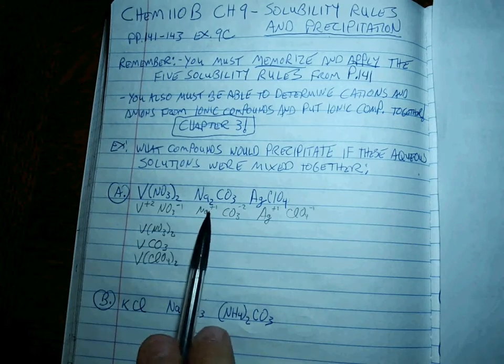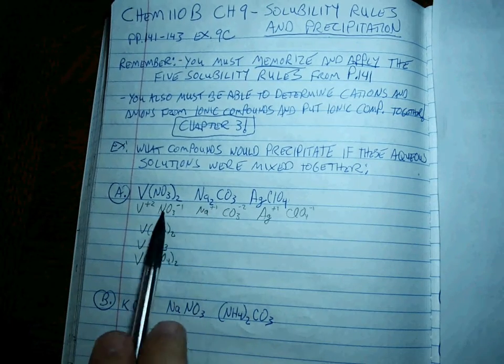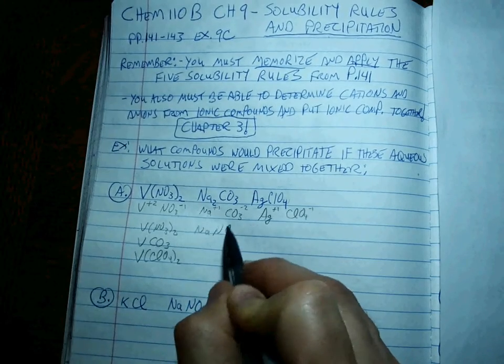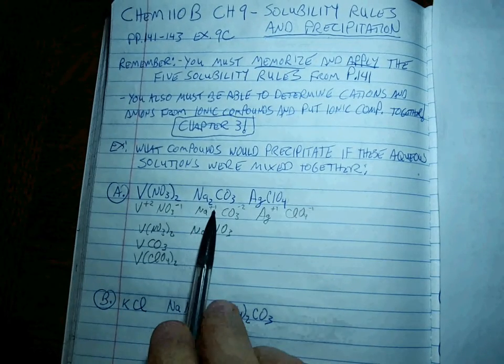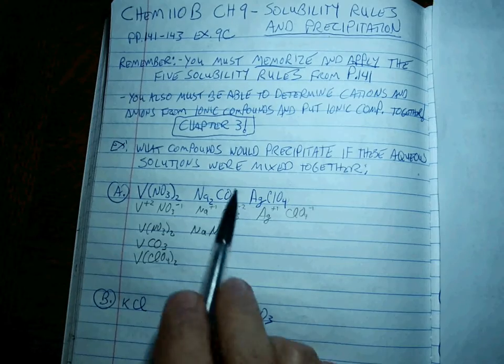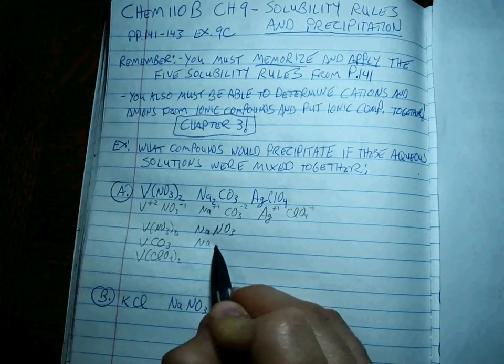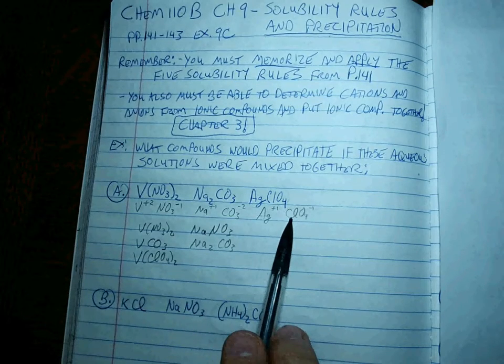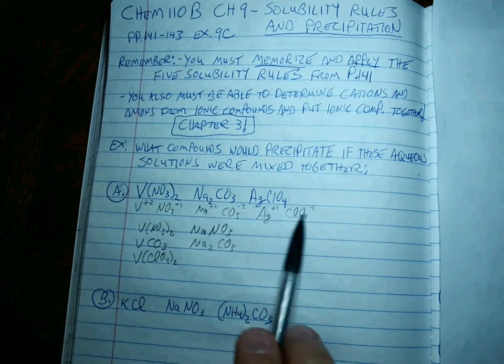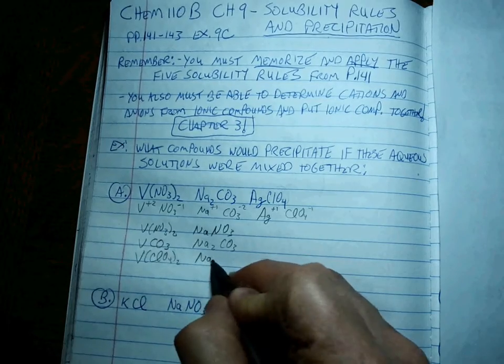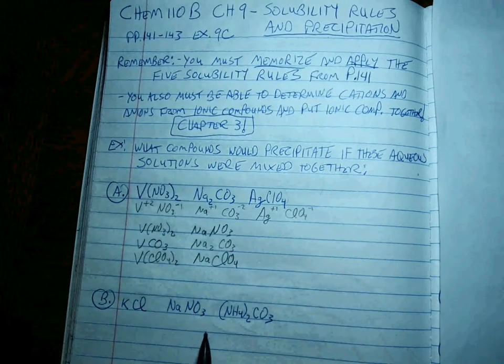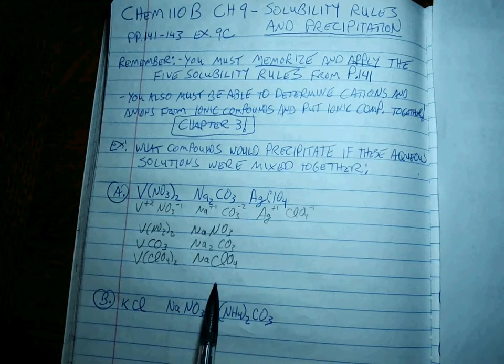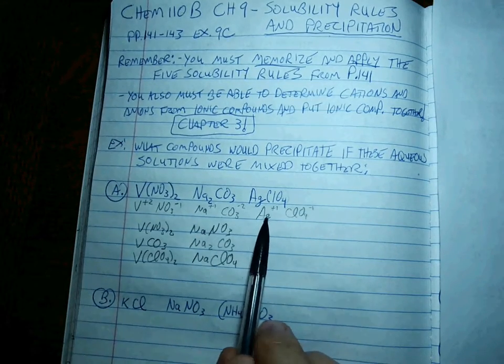What if sodium plus 1 is the cation? Sodium plus 1, NO3 minus 1 makes NaNO3. Sodium plus 1 plus carbonate minus 2, Na2CO3. What about Na plus 1 plus ClO4 minus 1? That's a one-to-one ratio. NaClO4. Those are all the three possible combinations with sodium.